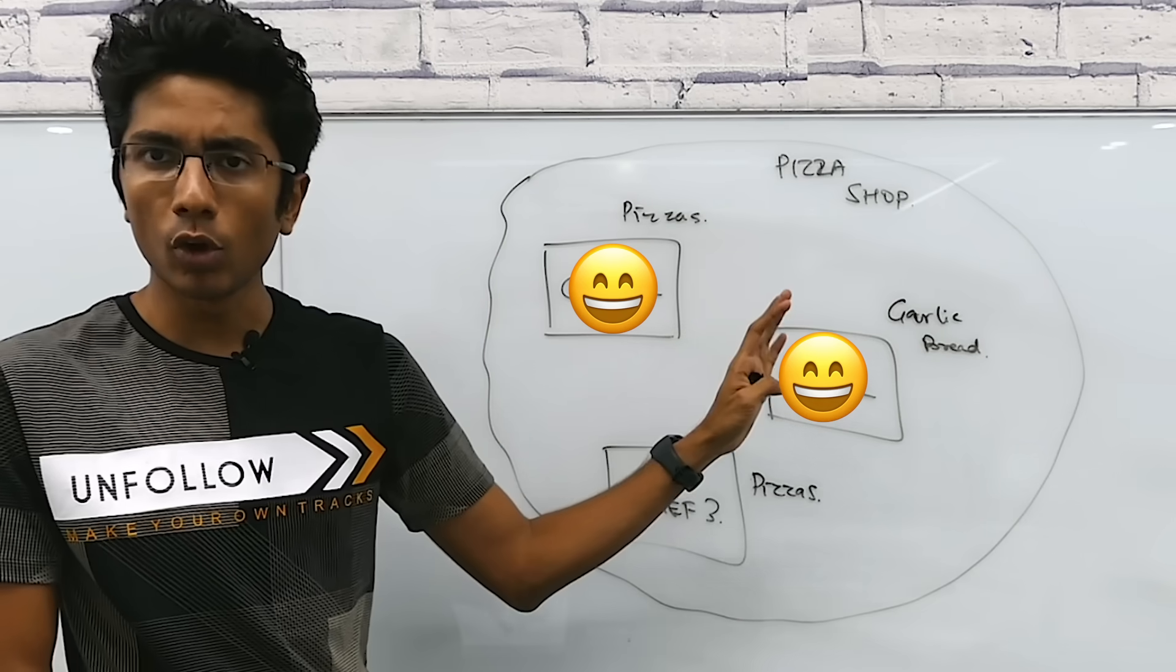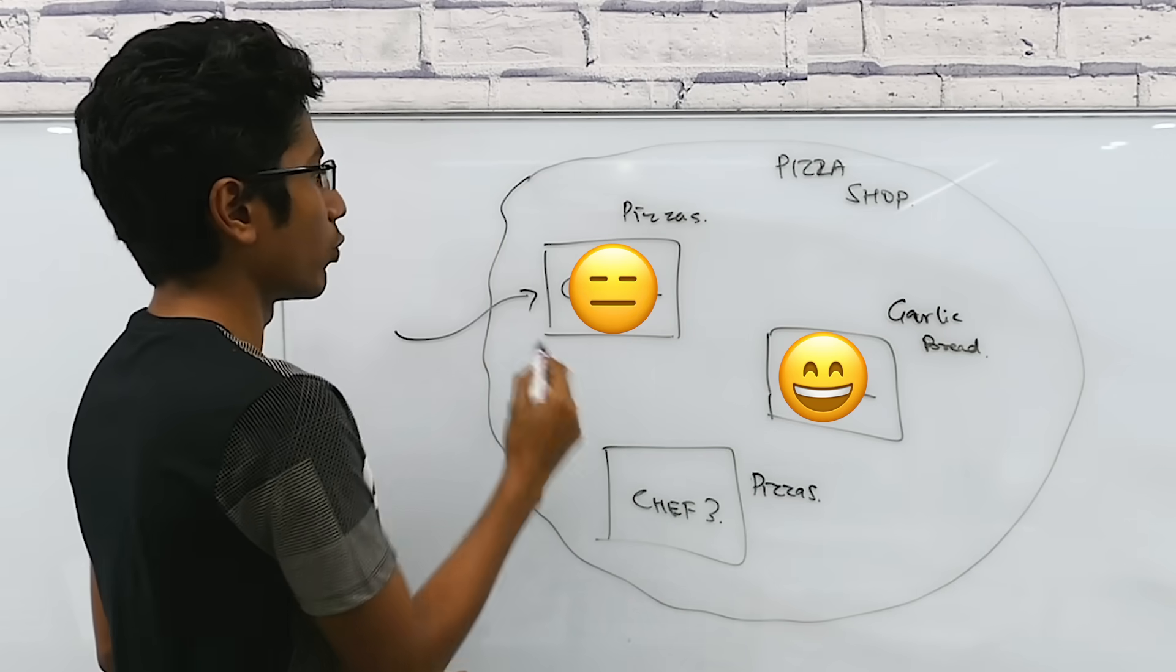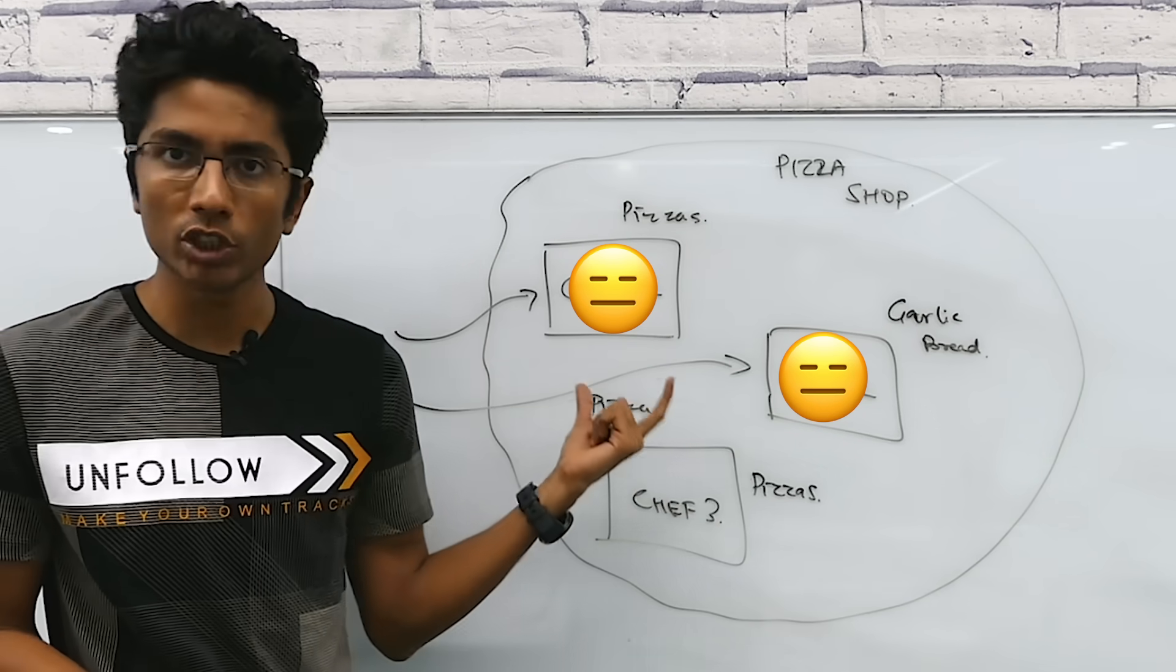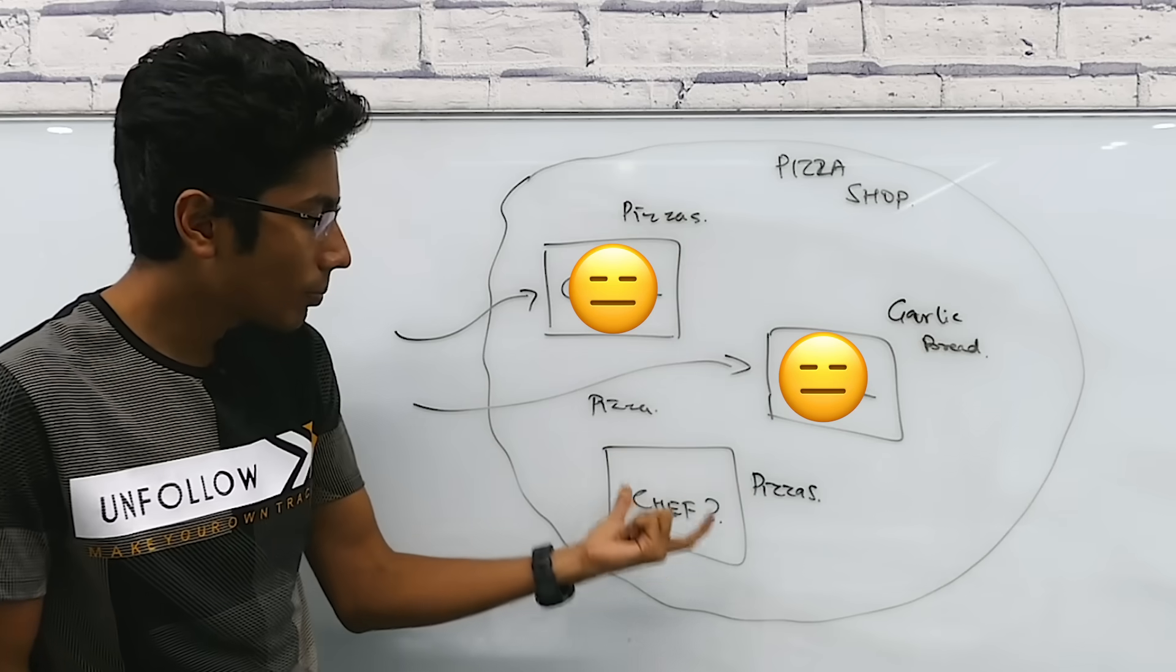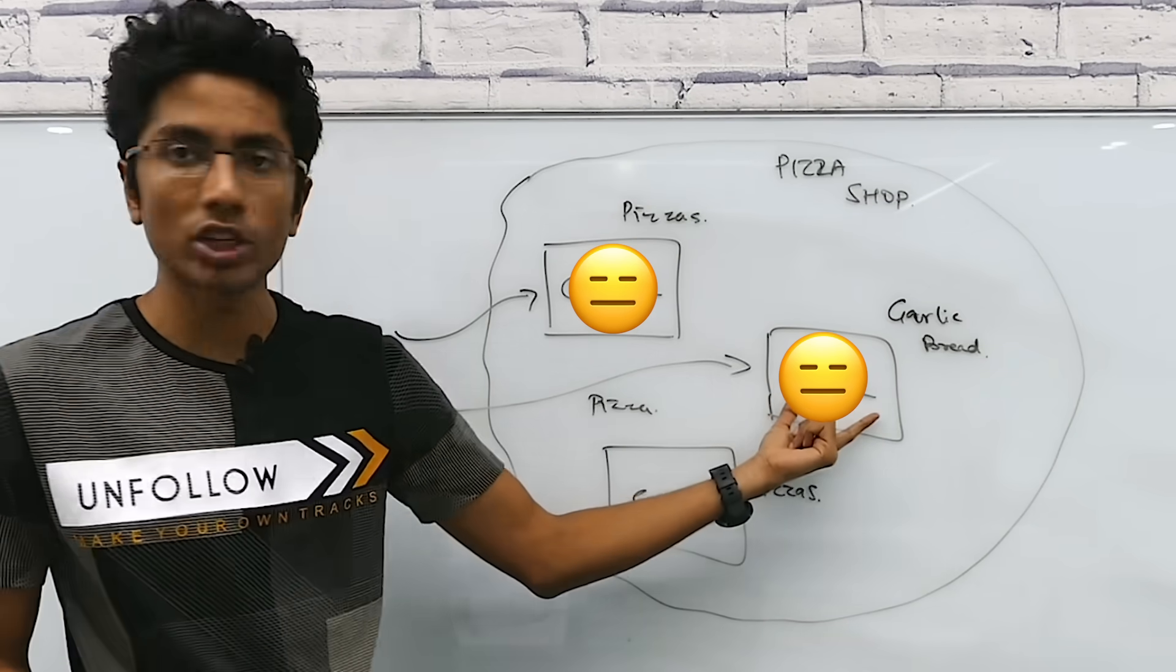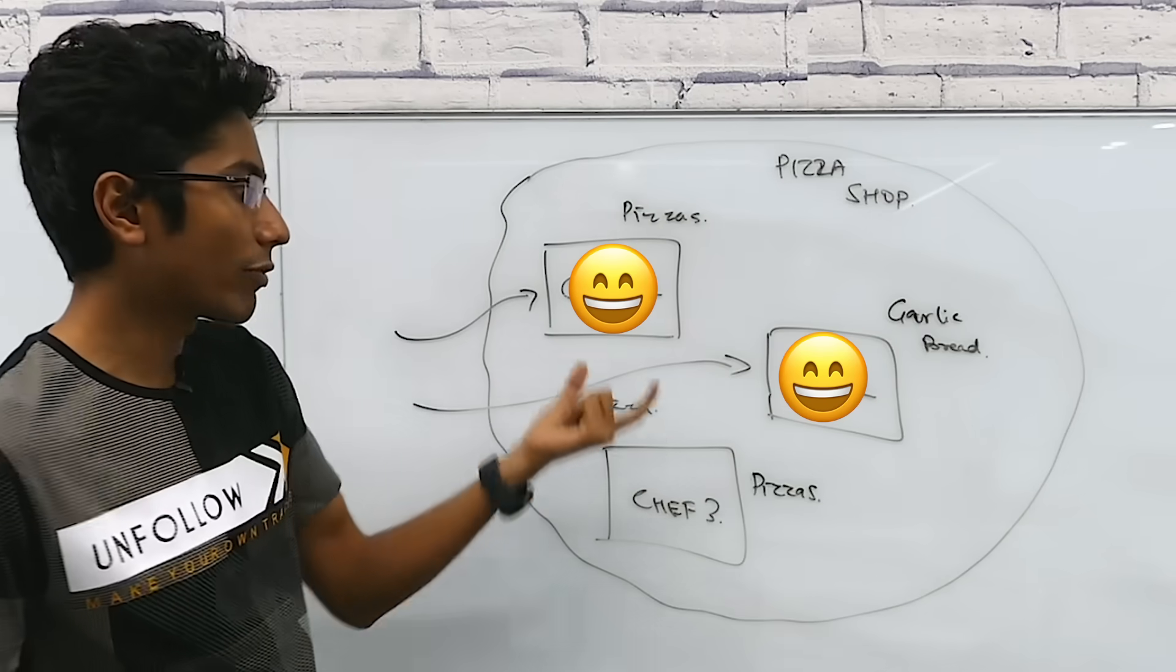What you can do is randomly assign them orders. So if you have garlic bread, it can go to chef one, you can take pizza and send it to chef two. But this is not the most efficient way to use your employees. You can build on their strengths and route all garlic bread orders to chef two and all pizza orders to chef one and three.